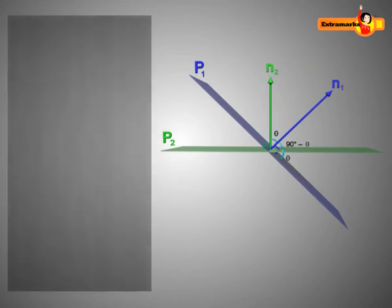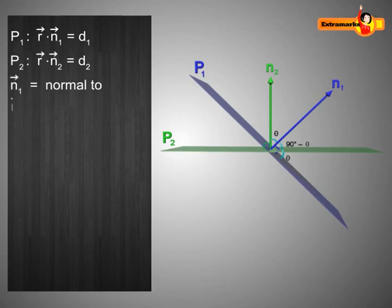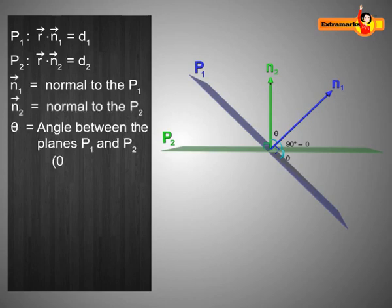Suppose the equations of planes P1 and P2 are as shown here. Here, vectors N1 and N2 are normals to the planes and theta is the acute angle between the planes.